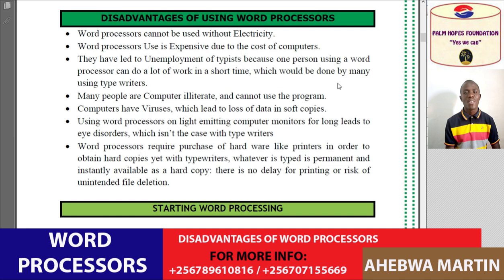Disadvantage number three: word processors have led to unemployment of typists, because one person using a word processor can do a lot of work in a short time, which would have been done by many people using typewriters. Using one computer, you can type one document and print out many copies, and this has led to unemployment, especially among people who were typists.